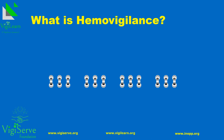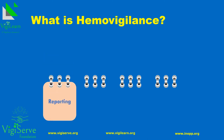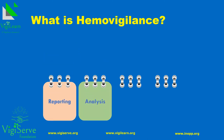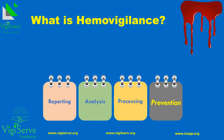What is Hemovigilance? Hemovigilance refers to the monitoring, reporting, investigation and analysis of adverse events related to the donation, processing and transfusion of blood, and taking action to prevent their occurrence or recurrence.